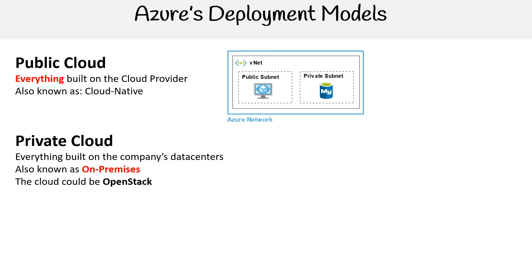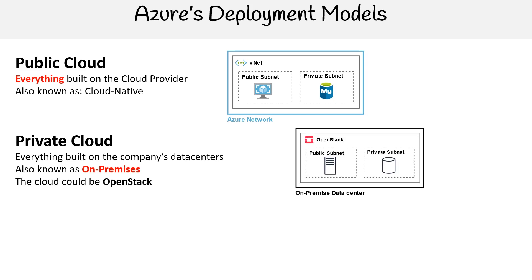Then we have private cloud. This is where everything is built on the company's data, also known as on-premises, because it's within the premises of the organization — like their physical location. An organization could technically be operating their own cloud, but it would be private cloud. It could be running open source cloud software that mimics what Azure would do, such as OpenStack, running a virtual machine or a server and a database.